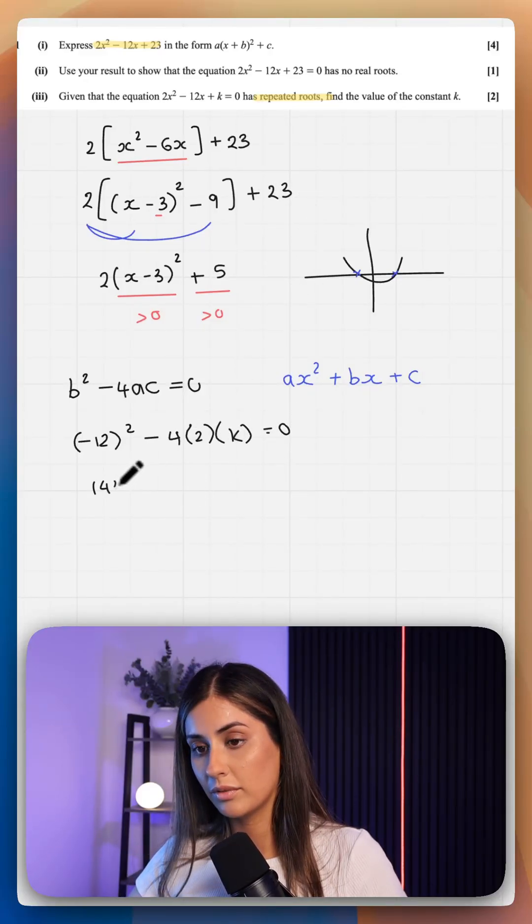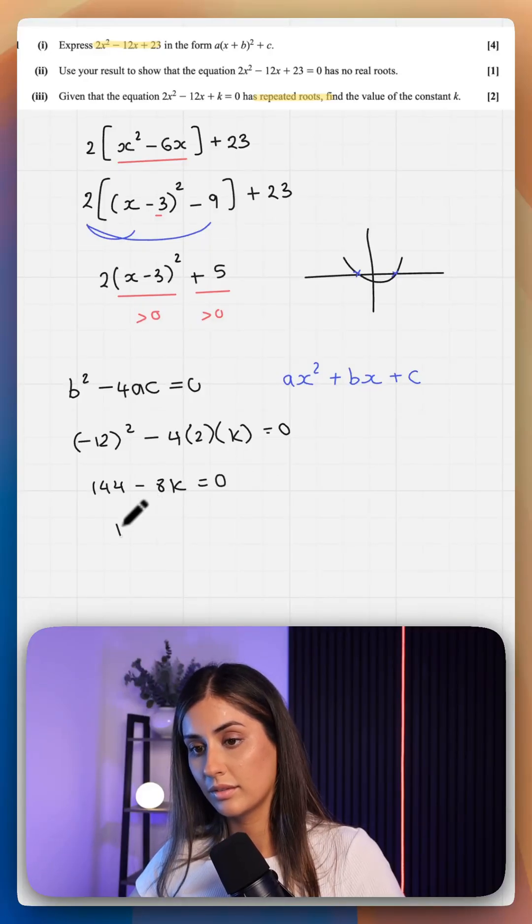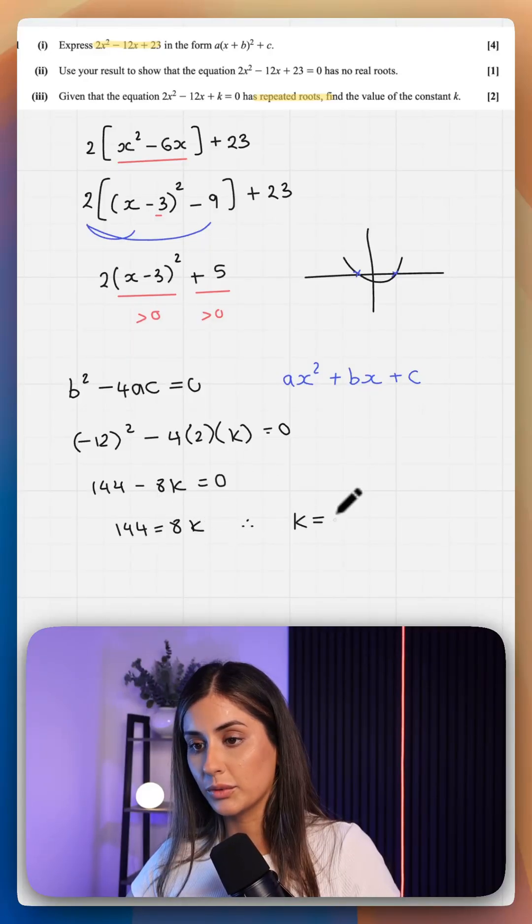144 minus 8k equals 0. So k is equal to 18.